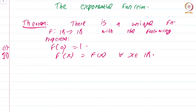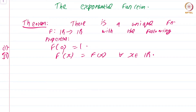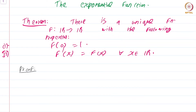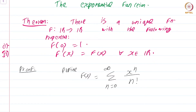So, there is a unique function which takes the value 1 at 0 and whose derivative is itself. Now that we are masters of power series, this is a fairly easy thing to do. Define f(x) = Σ(n=0 to ∞) xⁿ/n!.